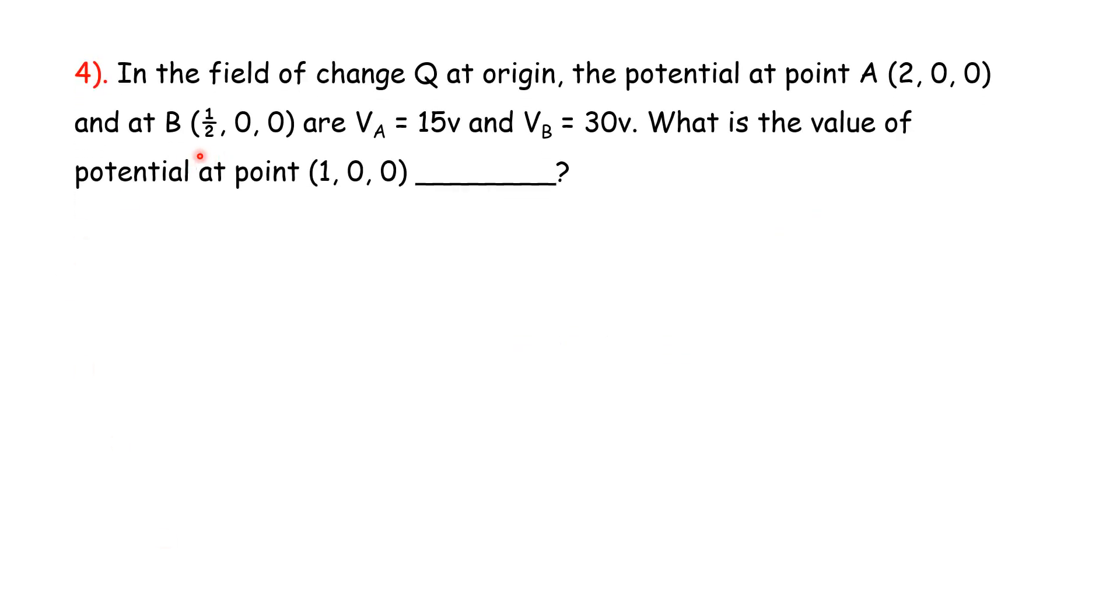Then next: in the field of charge Q at origin, the potential at point A(2, 0, 0) and at B(0, 0, 0) are VA equals 15V and VB equals 30V. What is the value of potential at point (1, 0, 0)?